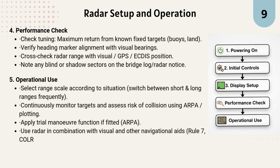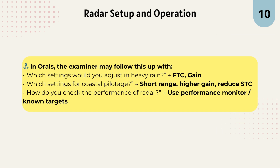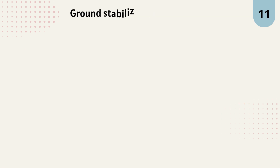Always combine radar with visual observations and other navigation aids, as required by COLREG Rule 7. In orals, the examiner may ask: which settings would you adjust in heavy rain? The answer is FTC gain. For coastal pilotage — short range, higher gain, reduce STC. How do you check the performance of radar? Use performance monitor or known targets.